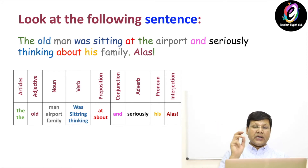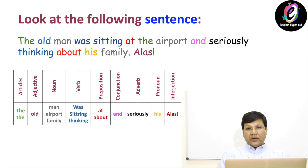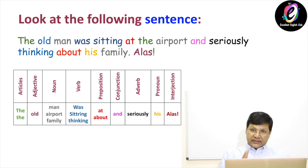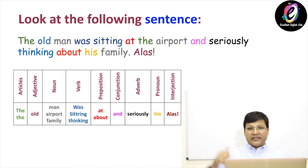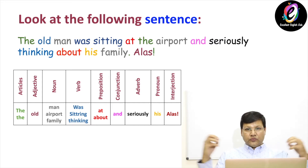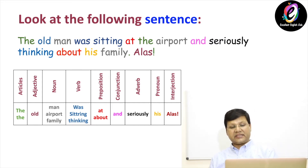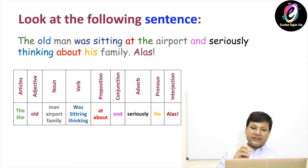In column number four, that is verb, you will have 'was,' 'sitting,' and 'thinking' — three verbs used in this sentence. The fifth one is preposition; two prepositions are used in this sentence: 'at' and 'about.' In the next column, conjunction, we have only one conjunction in the sentence, that is 'and.' Conjunction means a word which joins two sentences, two words, or two phrases.